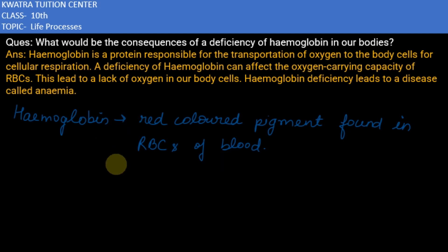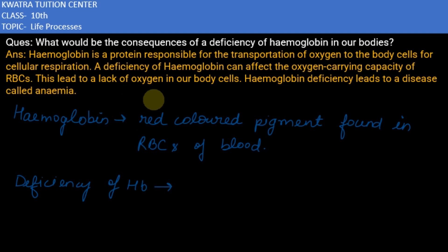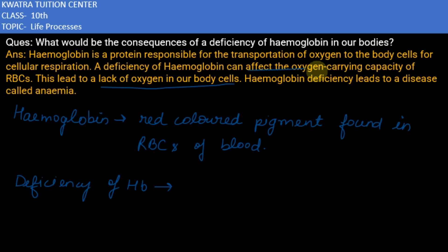Hemoglobin carries oxygen to the cells of the body, aiding in cellular respiration. Now, deficiency of hemoglobin leads to the lack of oxygen in our body cells, and it affects the oxygen carrying capacity of red blood cells.